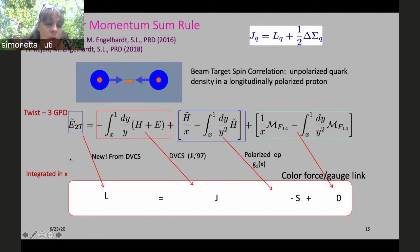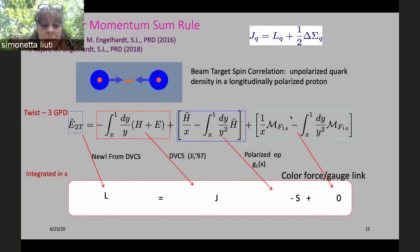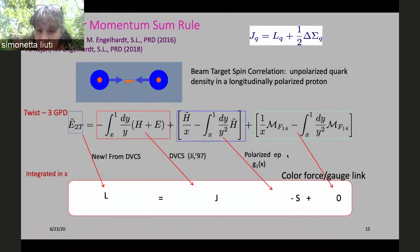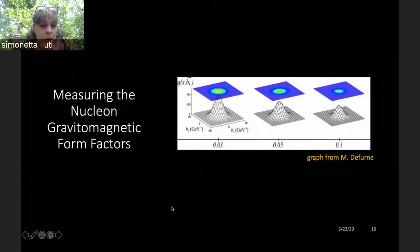As pointed out in papers we wrote, the orbital angular momentum component is related to the twist-3 GPD. In a second phase of measurements accessing twist-3 GPDs, it will be important to measure this. The relationship shown is a Wandzura-Wilczek relation where the different components acquire a particular physical meaning.